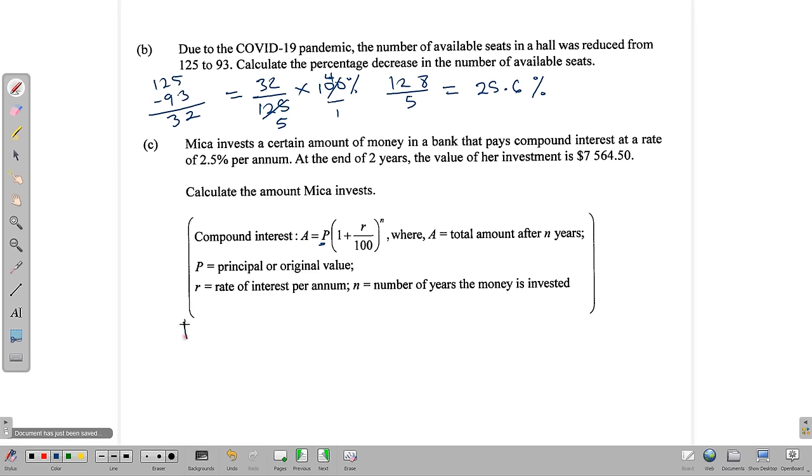So let's fill in the information that we know. We know we do not know P, but we do know that the interest rate is 2.5 percent. So let's write that over 100. And we know the number of years is 2 years. We also know that when we calculate this, the total amount, the total value of the investment, the A, is $7,564.50.